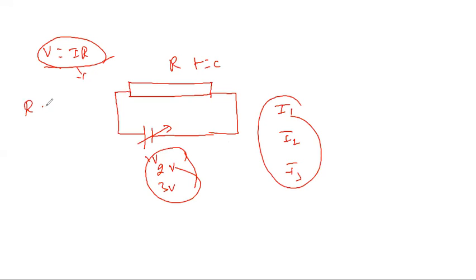R is equal to rho L by A. First, known quantities. The current I is equal to N, E, A, V_D. V_D is equal to E by M into tau.